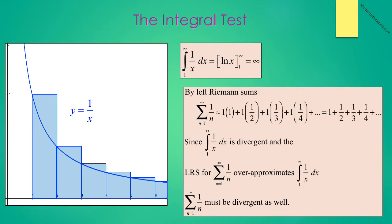Now this is no great revelation. We know that the sum from n equals 1 to infinity of 1 over n is divergent because it is the harmonic series, which is a divergent p-series. However, you are just given that rule — this is a geometric proof using integrals.